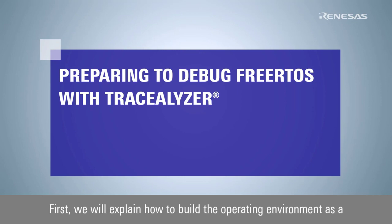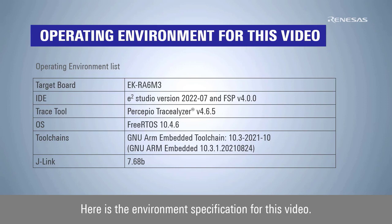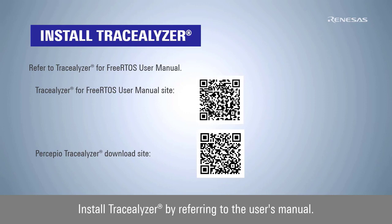First, we will explain how to build the operating environment as a preparation for debugging FreeRTOS using TraceElyzer. Here is the environment specification for this video. Install eSquare Studio and FSP using the platform installer. Install TraceElyzer by referring to the user's manual.